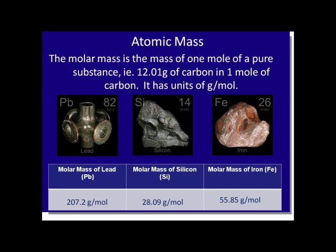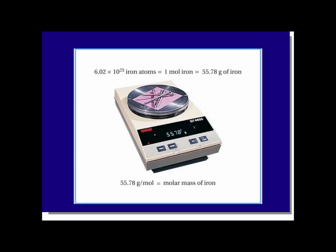We can combine all of our information together — grams, moles, and atoms — by looking at iron. If I have one mole of iron, it has 6.022 times 10 to the 23rd atoms of iron, and this is also equal to 55.85 grams of iron. Note: there is a misprint on this slide, but all of these values are equal to each other and will be used as conversion factors. We're going to be converting between atoms and moles, and also between moles and grams.